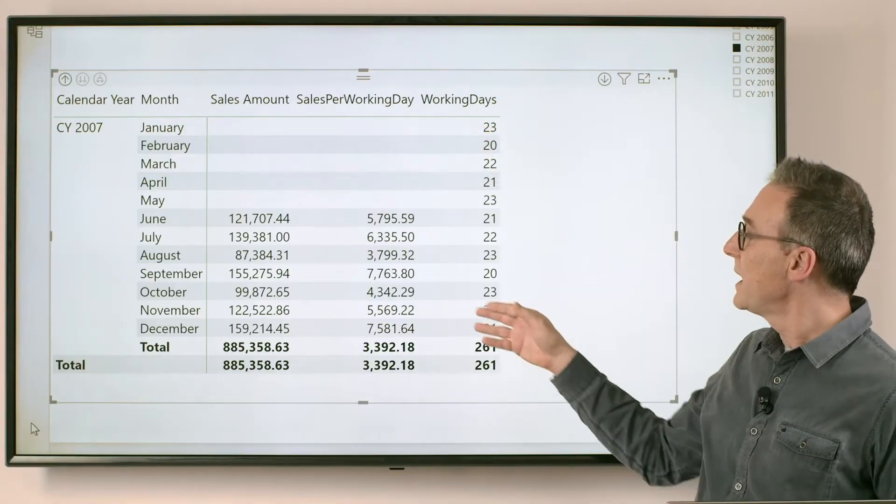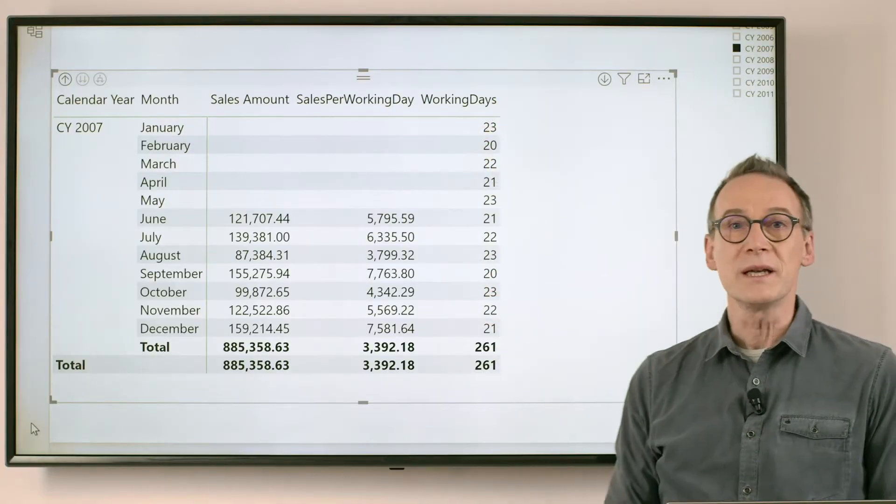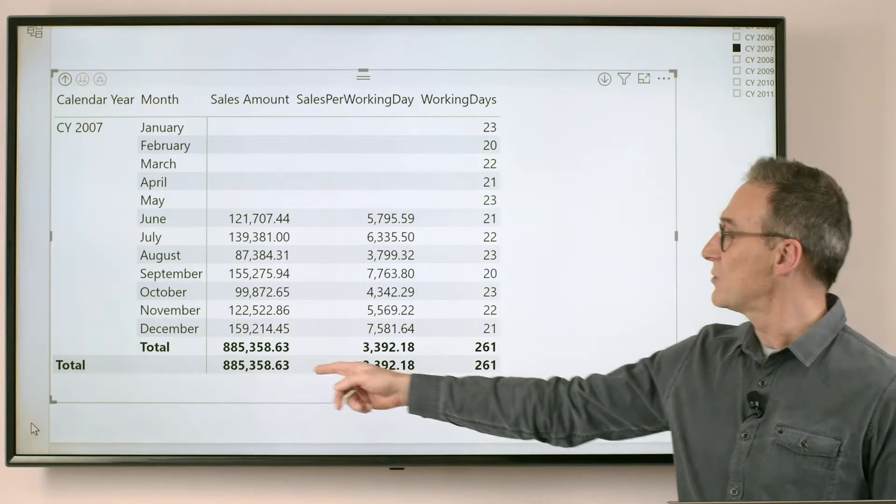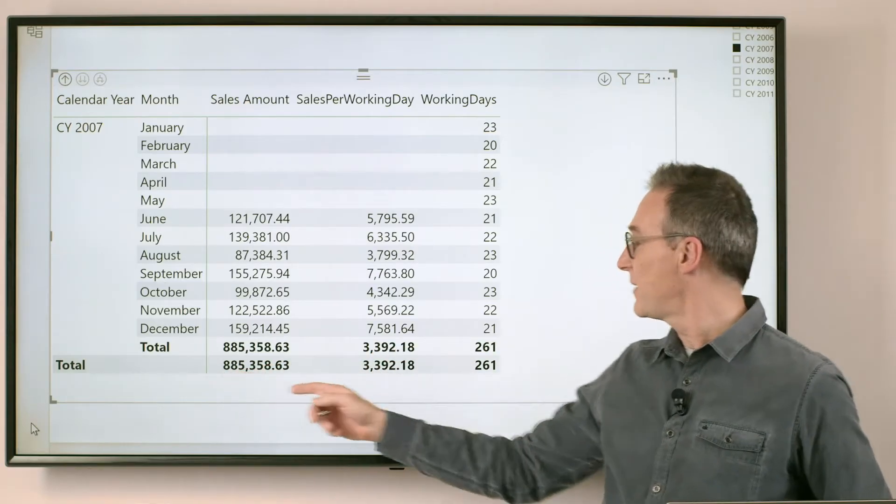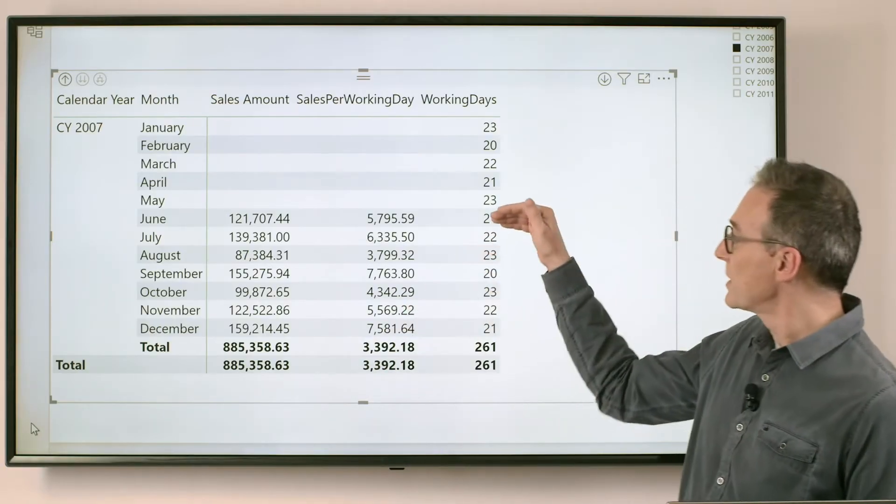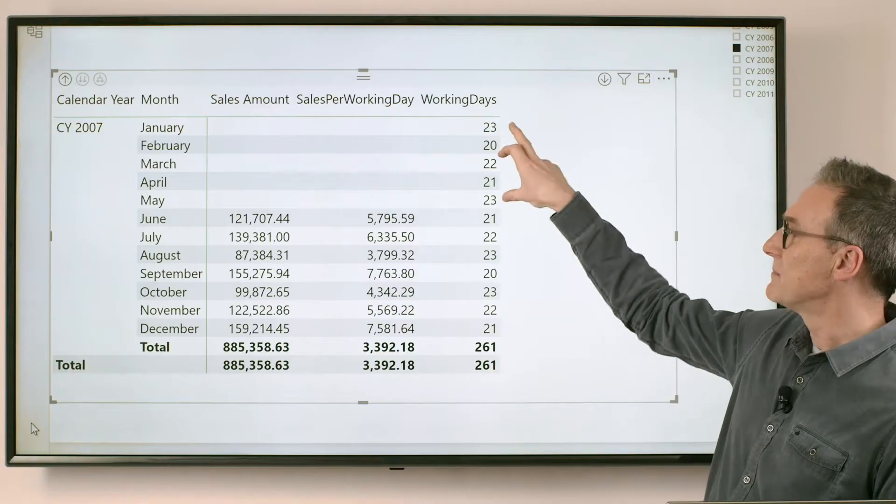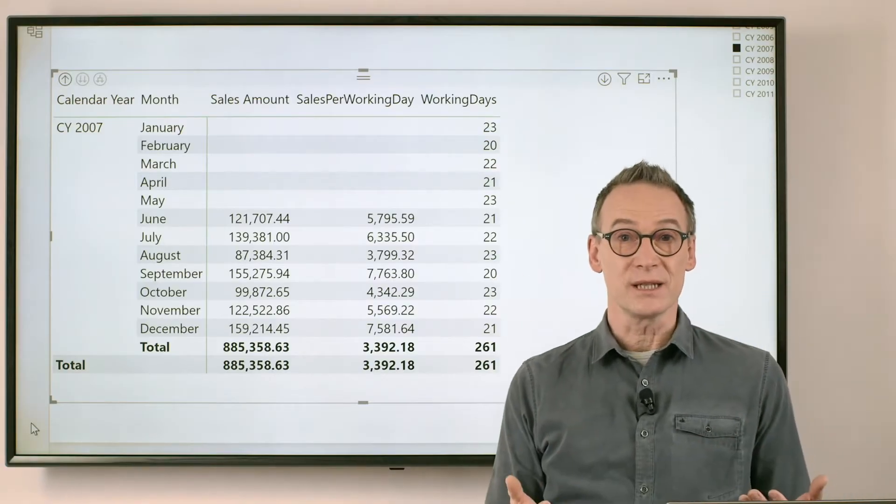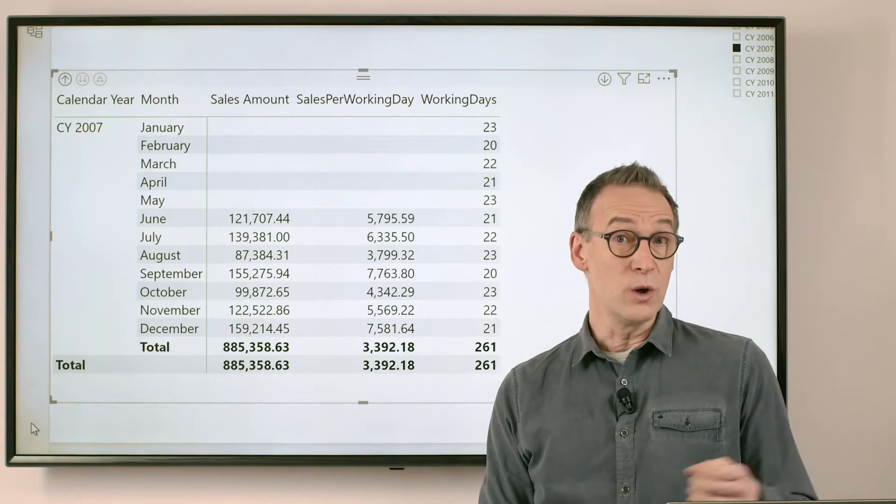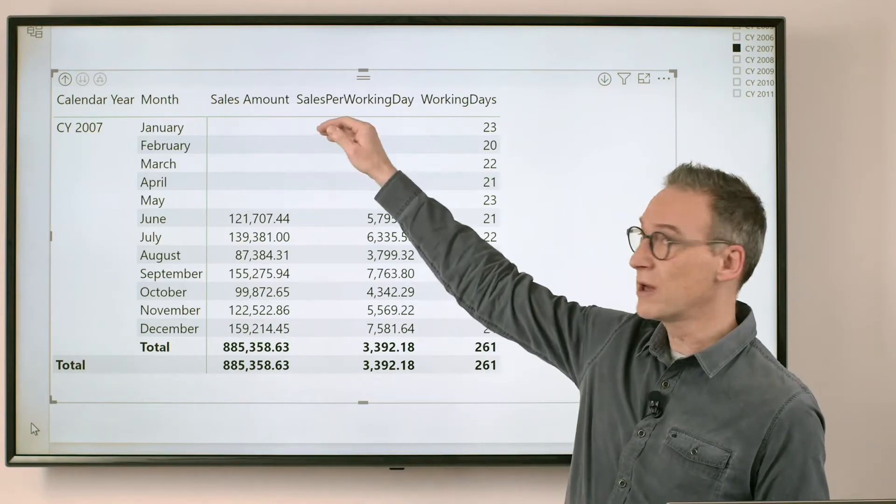...and the problem becomes clear. We are dividing the sales amount, which is 885, divided by 261 days, many more than the working days month by month. I'm taking into account values which should not be considered. And the reason I don't want to consider them is because I don't have sales.